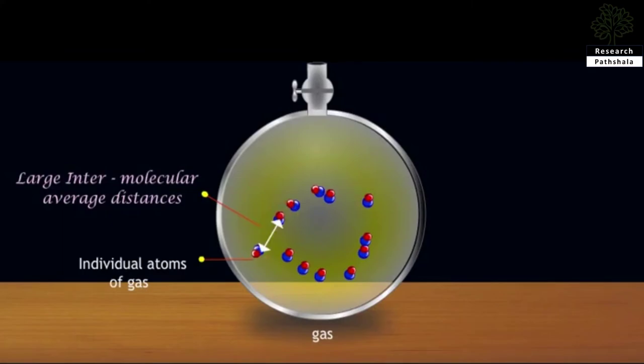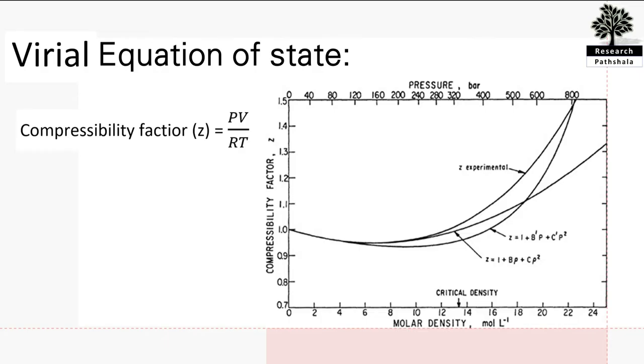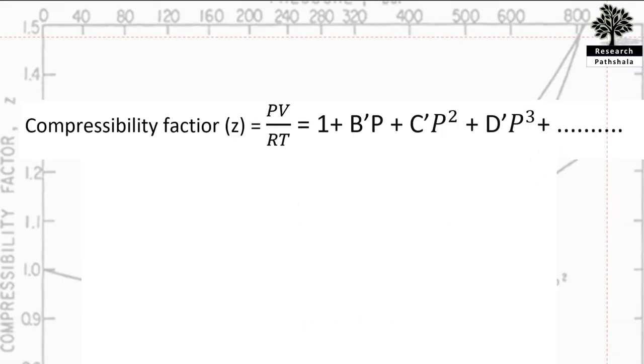The virial equation of state is Z = PV/RT = 1 + B'P + C'P² + D'P³ + ..., which is similarly equal to 1 + B/V + C/V² + D/V³ + ..., where B and C are the temperature-dependent second and third virial coefficients, and Z is the compressibility factor.